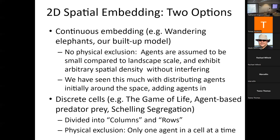With continuous embedding, you can have agents as close or as far from each other as desired, located at spatial positions that are continuous. The other option is a discrete environment — I saw a glimpse of this today with Conway's Game of Life. Some of you may have looked at Schelling segregation, which also has these cells. Here we're divided into columns and rows — it's a grid — and there's mutual exclusion: only one or zero agents can be present in each patch.